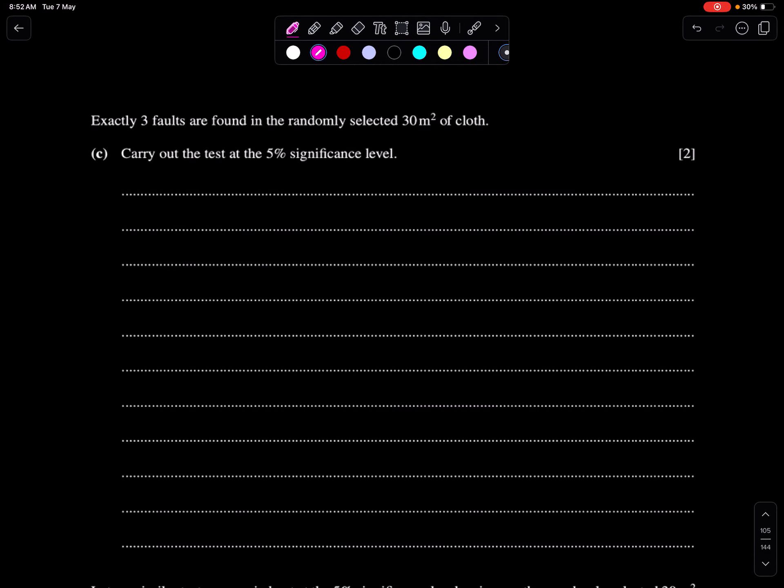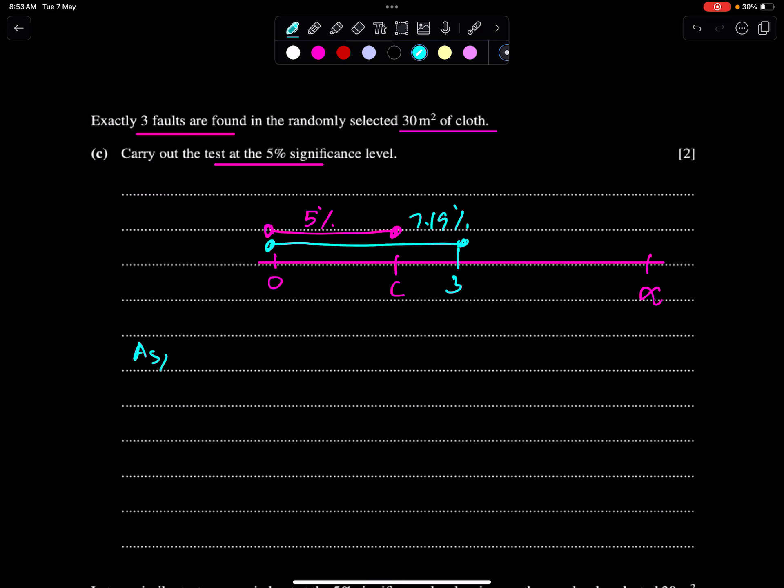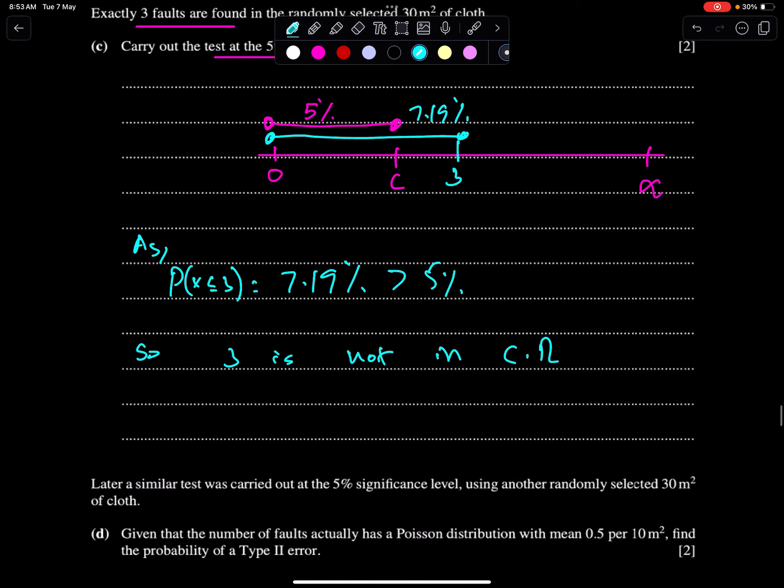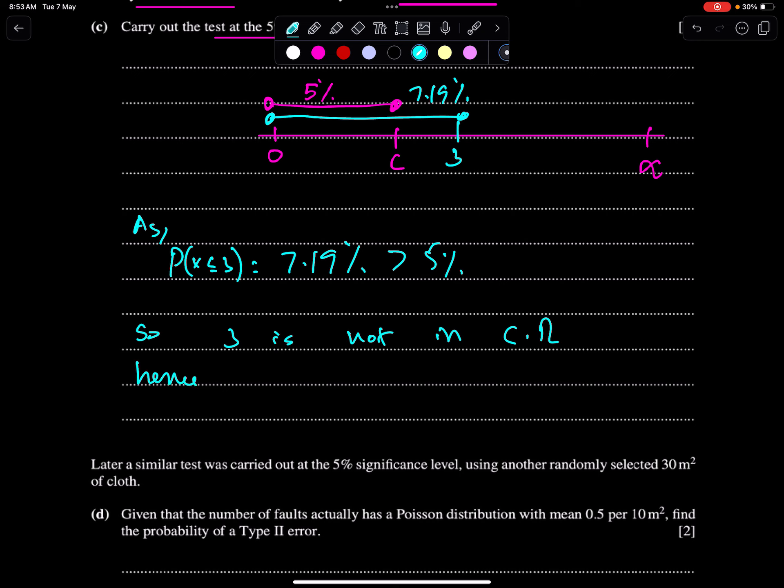Next point: exactly 3 faults are found in the randomly selected 30 meter square of cloth. Carry out the test at 5%. So this is very simple. You already have done this in previous point. And this is 5%. And 3 is not in critical region because this probability is 7.19%. You have to mention as 7.19% is greater than 5%, probability of less than equal to 3. So 3 is not in CR.